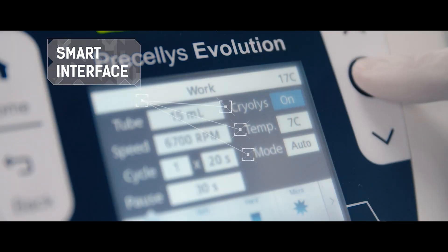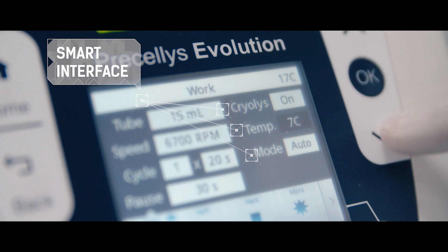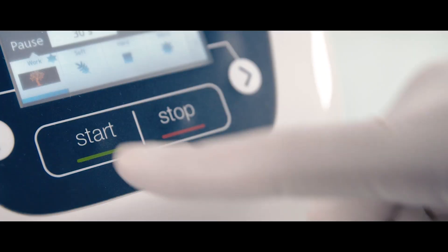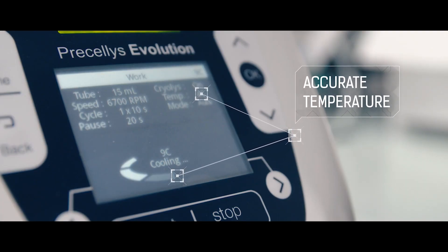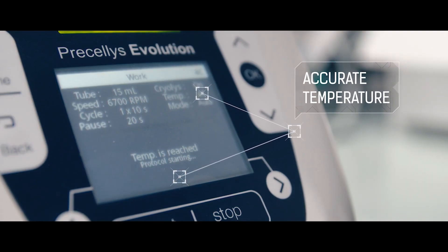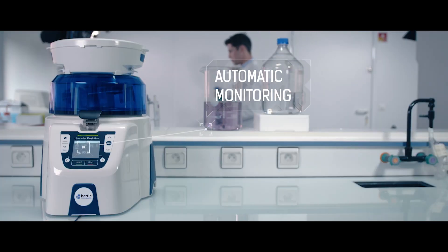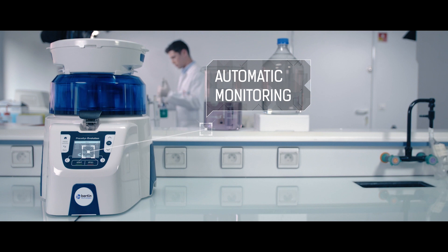The Pressilis Evolution software monitors the temperature for fully accurate results. Thanks to the automated cooling mode, the homogenization starts when the set temperature is reached. It stays consistent during and after processing to keep your samples in optimal conditions.